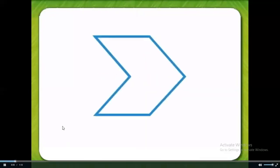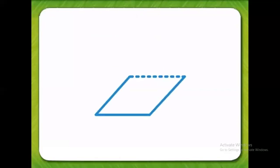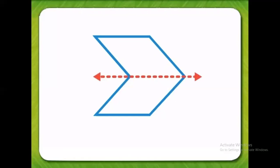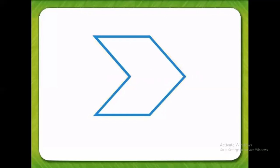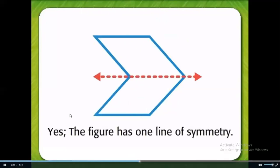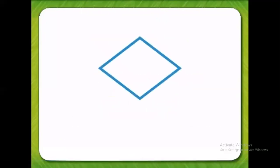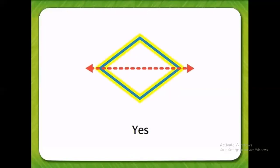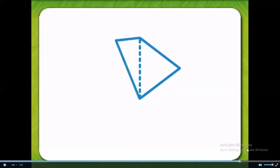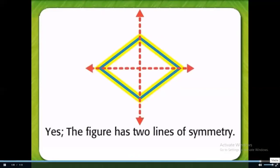Symmetry: tell whether this figure has line symmetry. Fold the figure in half, unfold it, and trace the fold — this is the line of symmetry. The top half is an exact match to the bottom half. Folding a different way, the two halves do not match, so this figure has one line of symmetry. The second figure also has line symmetry, with the top half matching the bottom half exactly. Folding it a different way, the two halves still match, so this figure has two lines of symmetry.